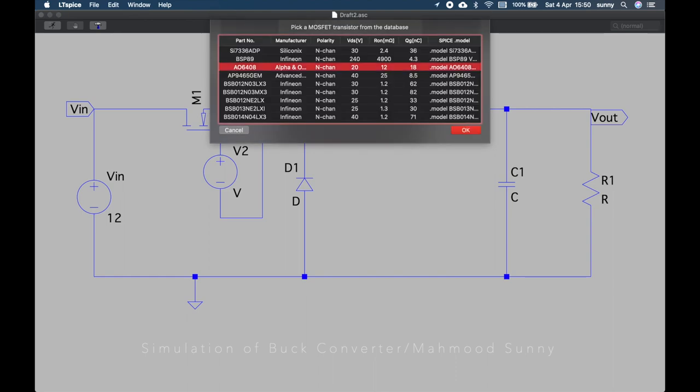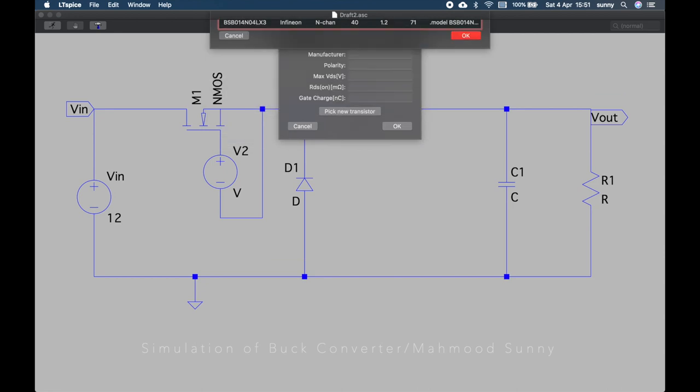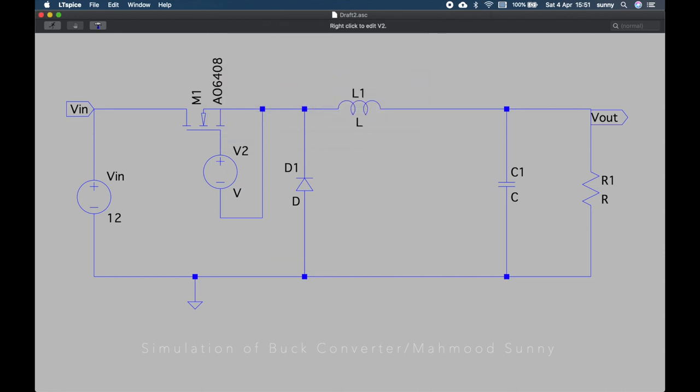Let's give it a value of 12V DC. We rename it as Vin. Then our MOSFET. Let's choose a commercial MOSFET from the menu. We can choose this one because it has VDS 20V which is greater than our supply voltage 12V. And on-state resistance is also on the lower side. It's not too much. We can use this one.